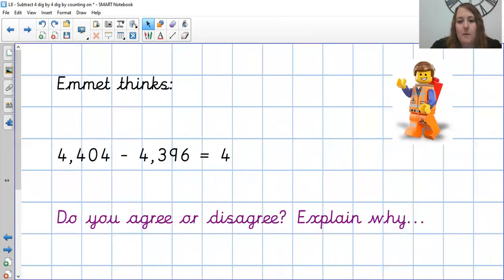Let's have a look at our Emmett problem today. Emmett thinks that 4,404 take away 4,396 is equal to 4. Looking at those, we're not quite sure if he's right or wrong yet. Do you agree, disagree? See if you can work out in your head. If not, we can work it out together. So we're going to start with our second number, 4,396, and we're going to keep adding on. Now, if we add on 4 to check his answer, we can see if we can reach that answer. 4,396, 4,397, 4,398, 4,399, 4,400.